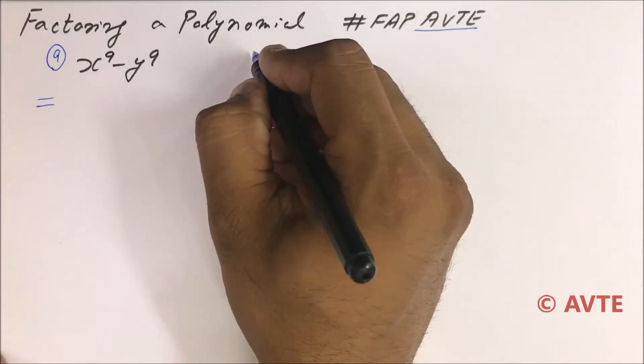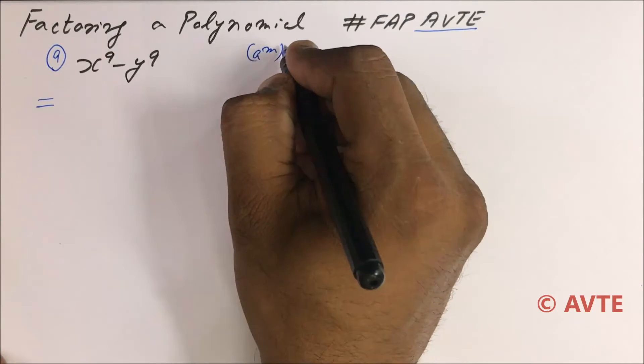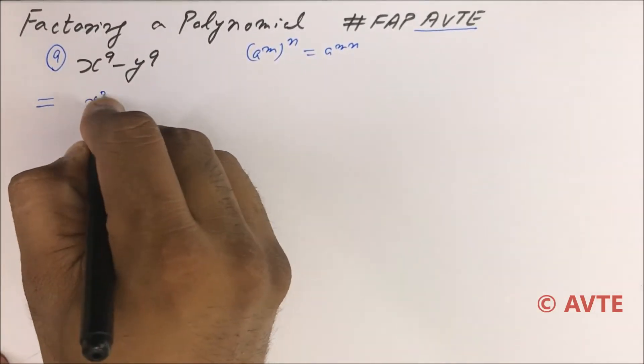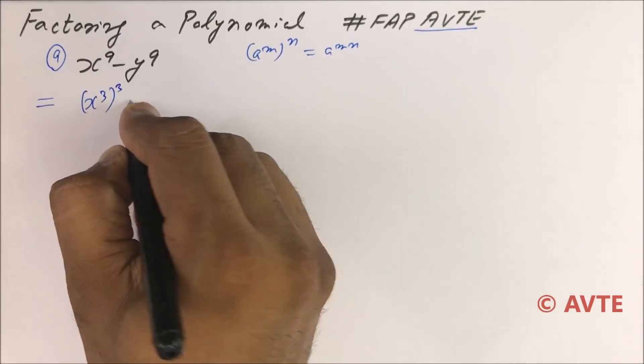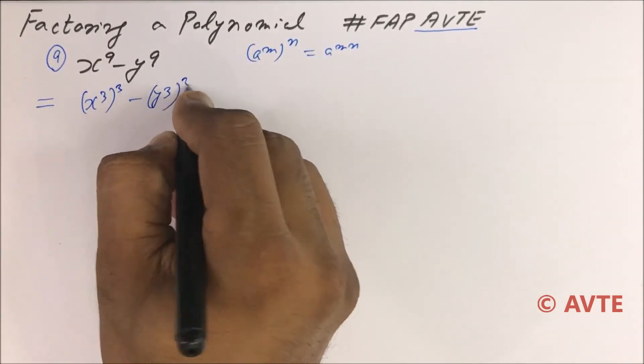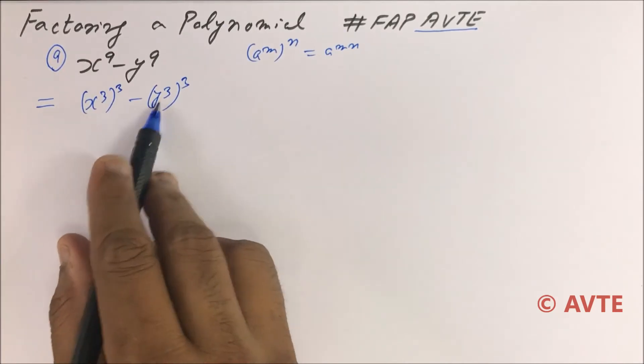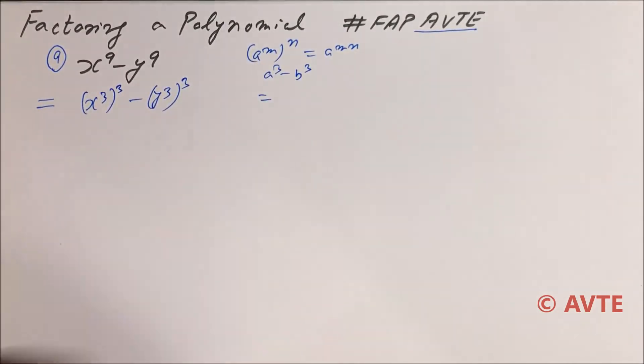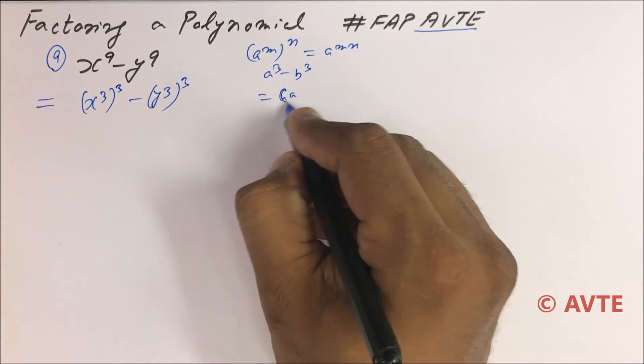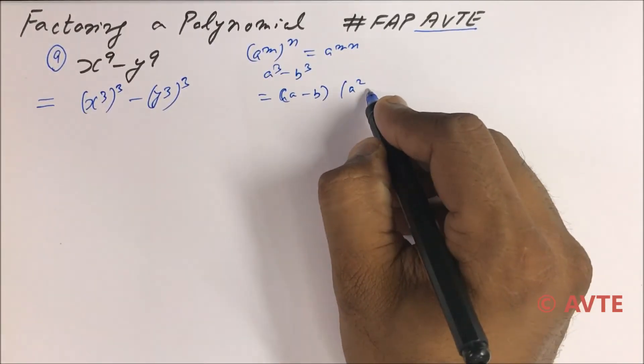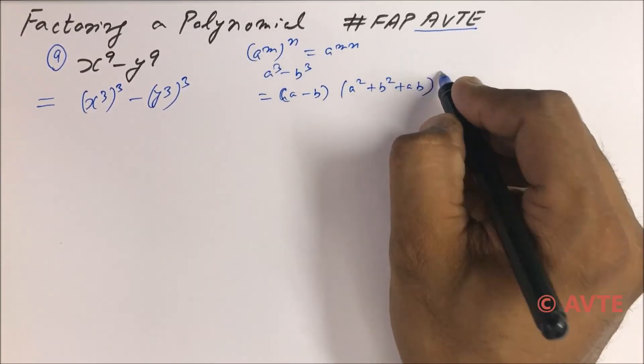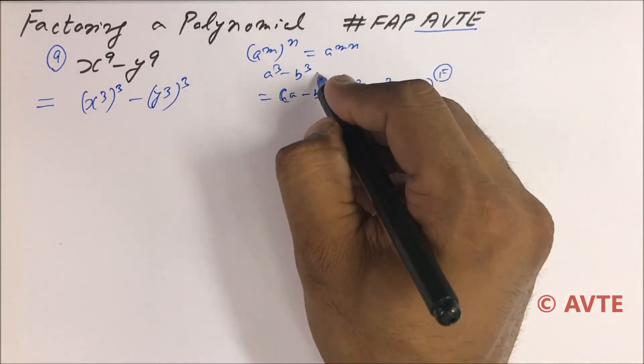a raised to power m raised to power n is a raised to power mn. So this is x cube cube minus y cube cube. Now this is a cube minus b cube. What is a cube minus b cube? That is a minus b times a square plus b square plus ab. This is the factorization formula of a cube minus b cube.